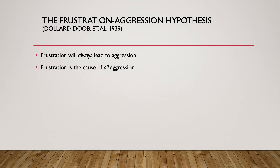The problem was that there were just enough exceptions to make researchers uneasy. There were situations where frustration occurred and it did not always lead to aggression, and there were other situations where aggression occurred in the absence of any kind of frustration. So the theory kept going through different revisions to try to explain the new findings. This theory never actually went away — it just sort of went out of fashion. The assumption is that frustration and aggression are undoubtedly linked, but the relationship is doubtful to be quite as straightforward and simple as the original model suggested.